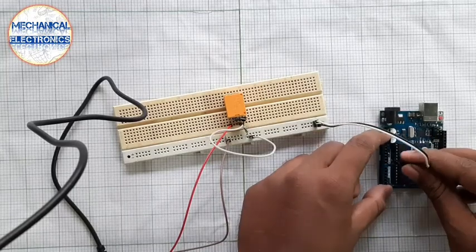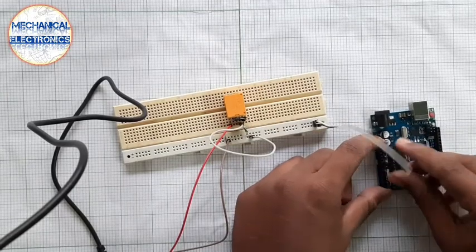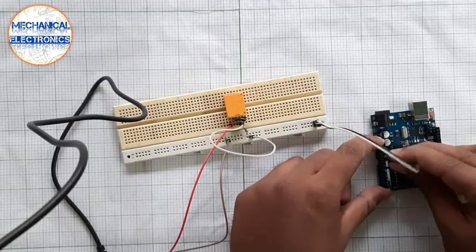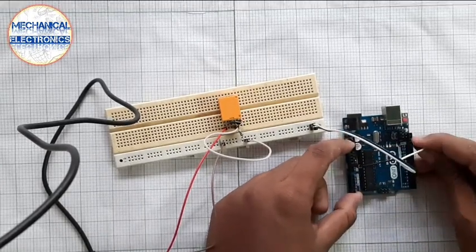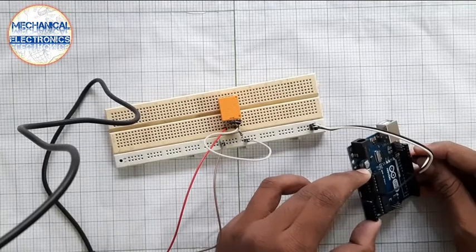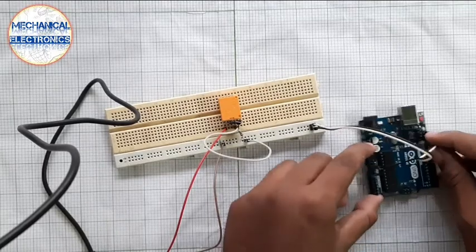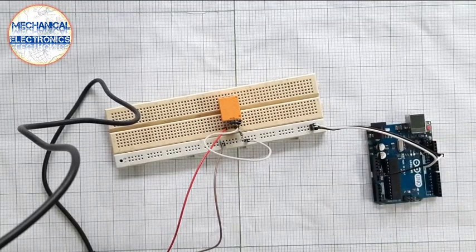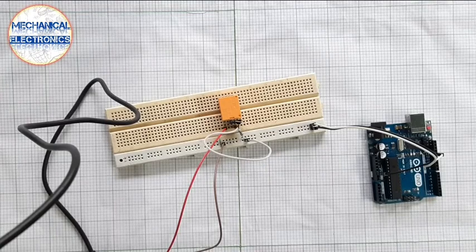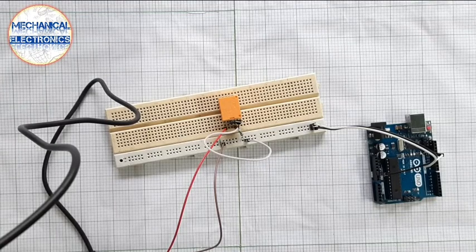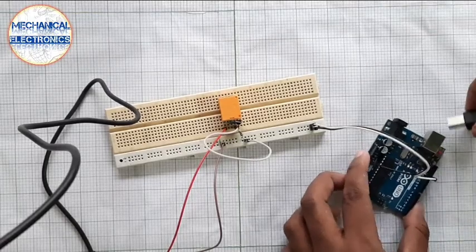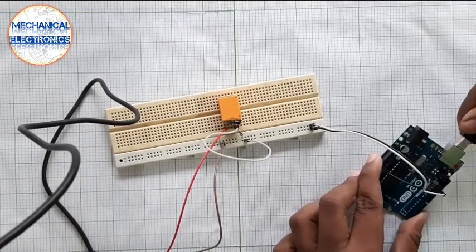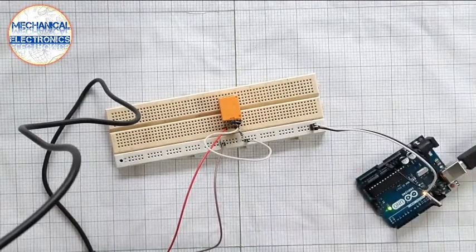We will just provide a common ground. And then, the digital pin. I am using a delay code. I have just modified it. You will get it. Now, let's just start it. Let's see how it is working.